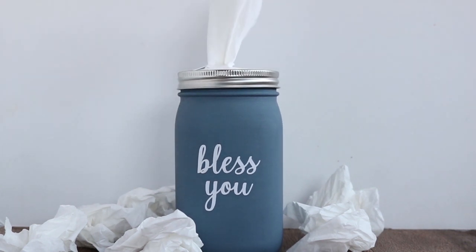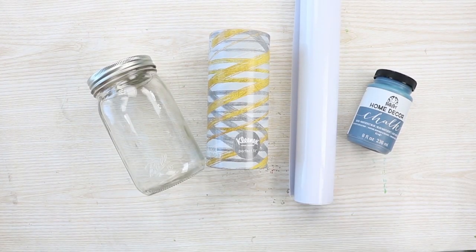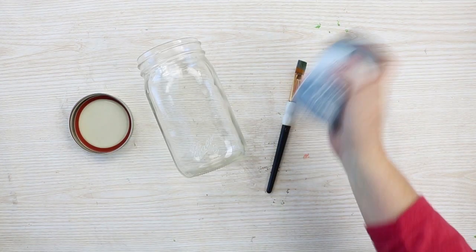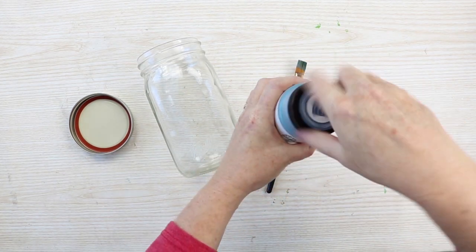Today we're going to make a mason jar tissue holder with our Cricut machine. You'll need a wide mouth mason jar that has plain sides, some paint, some vinyl, your Cricut machine, as well as some upright tissues to put on the inside.